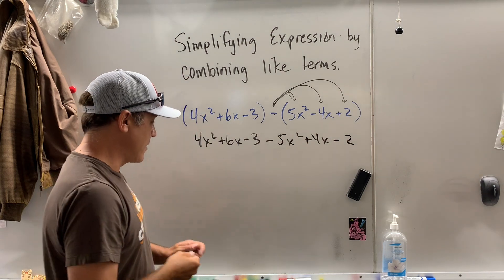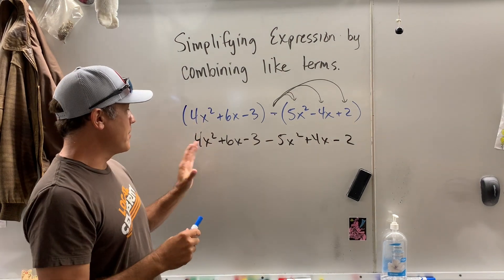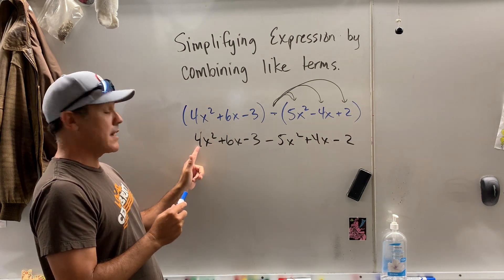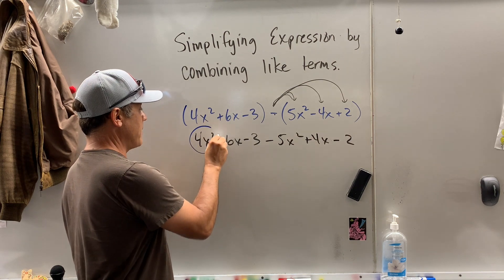Now we can combine like terms. So I think I invented this method of combining like terms. So I start to the far left. I see x squared. I got four of them here. I'm going to put a circle around that.